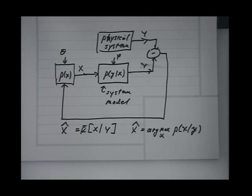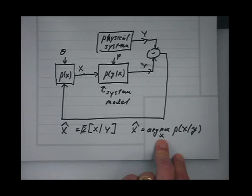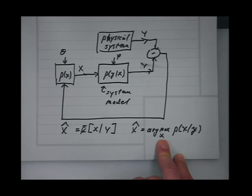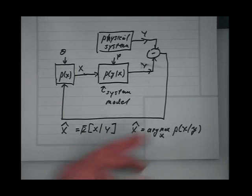So first we'll deal with that case. Sometimes the MAP estimate is terrible, but often it's okay. It's the most probable result given what we've observed.